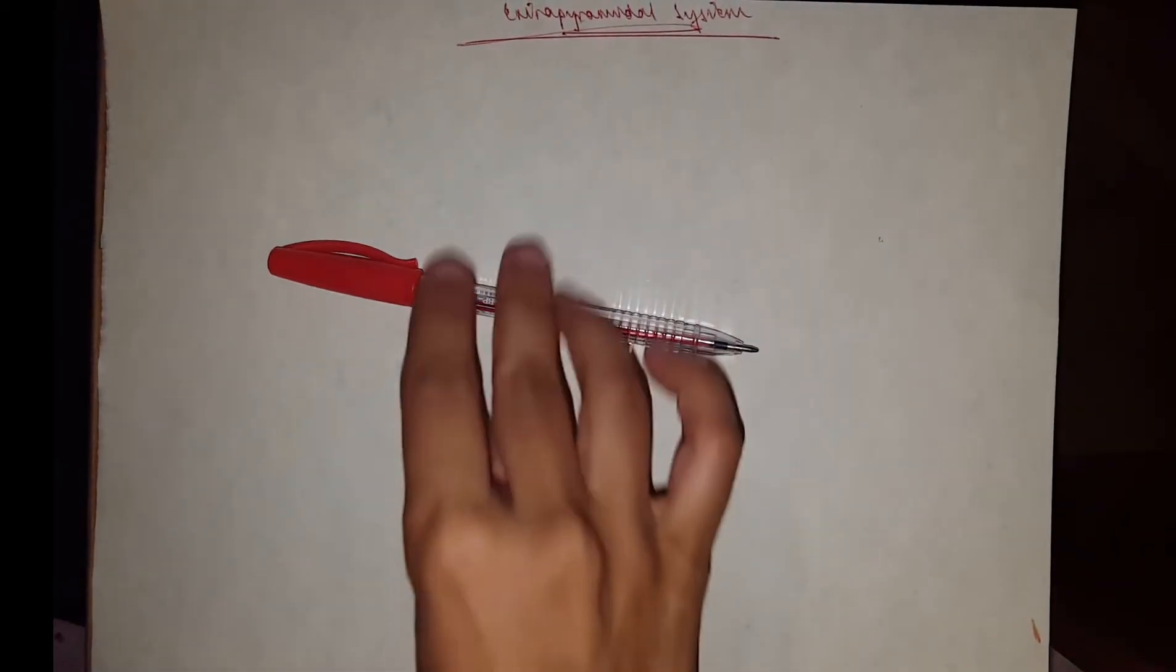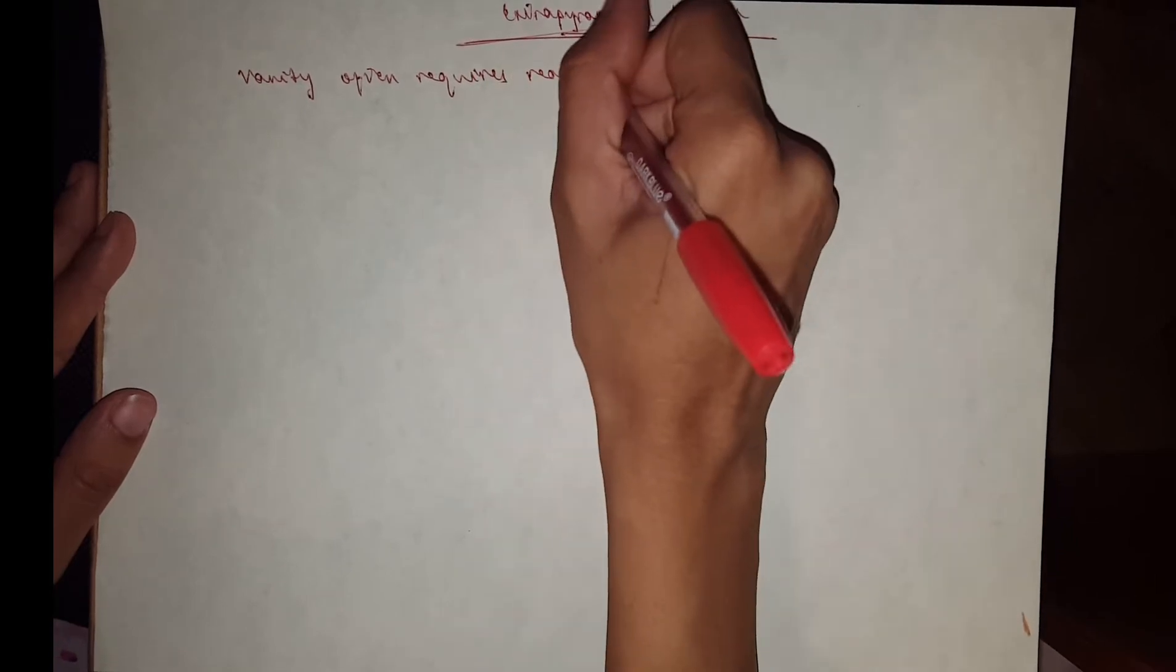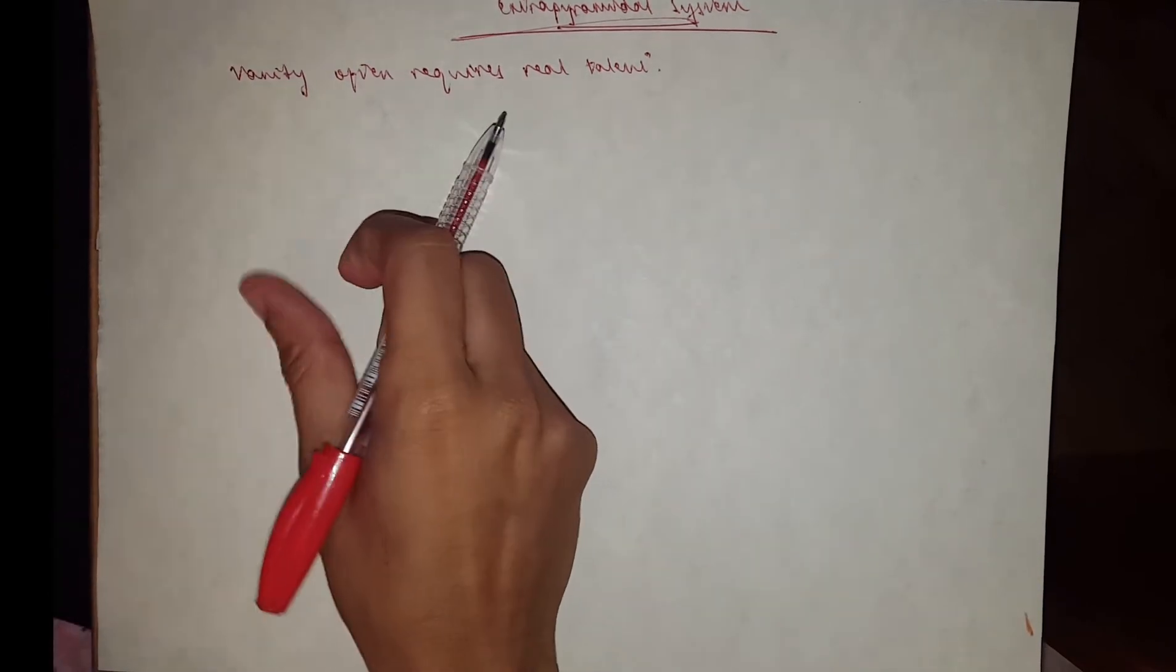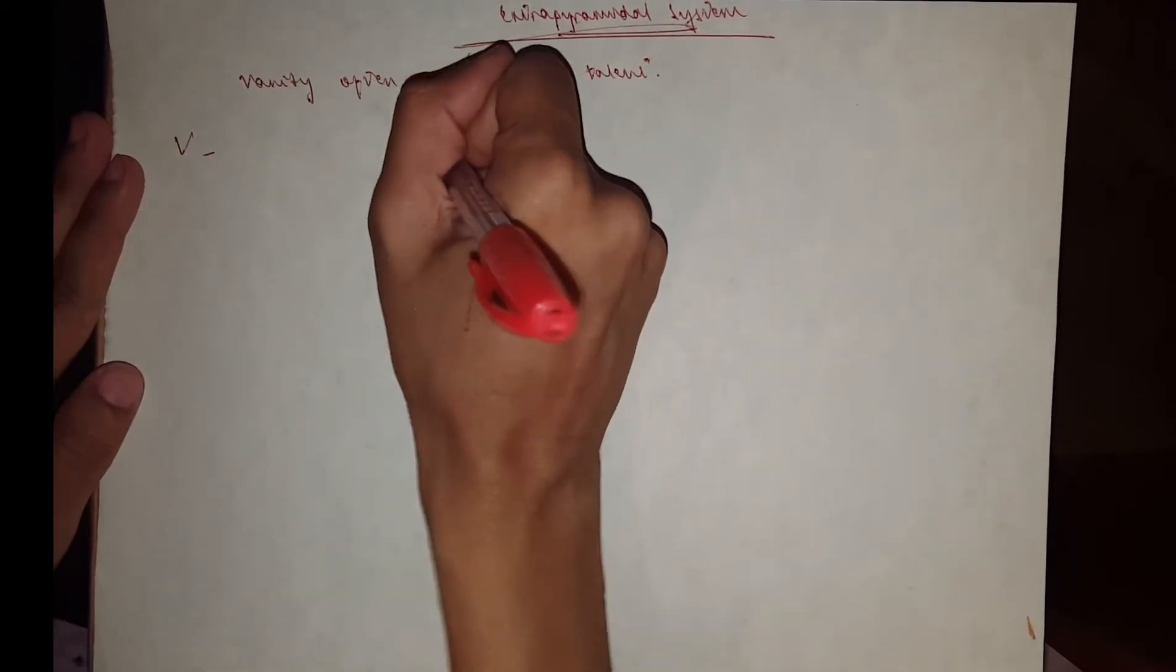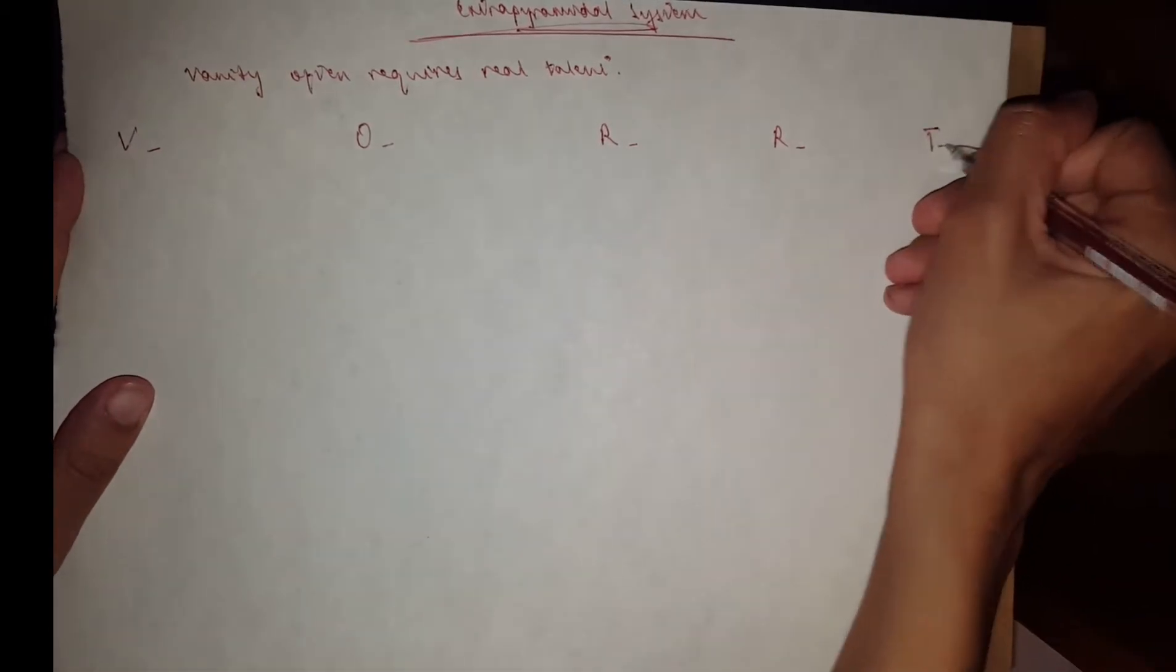Hey guys, today our Leila teachers will be doing the extrapyramidal system and our mnemonic goes: vanity often requires real talent, which is true. Now we'll start with the tracts, so if you have a V, you've got an O, we've got an R, another R, and a T.